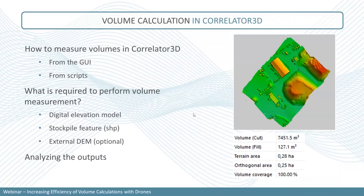Now let's talk about volumetric calculation in Correlator 3D. There are basically two ways to produce volumes: through the graphical user interface (GUI), or via script using a command prompt. To perform volumetric measurements, you need at least two things, with a third being optional. First, you need a digital surface model (DSM) to calculate your volumes. Second, you need either a shapefile or DGN file representing the polygons of the features you want to measure — this can also be drawn directly within Correlator 3D.